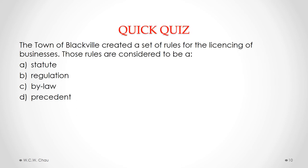Let's look at a quick quiz question — please pause this video so you can consider this question. The answer is C: bylaw. The town of Blackville created a set of rules for the licensing of businesses — those rules are considered to be bylaws. Bylaws are laws created or passed by municipalities.